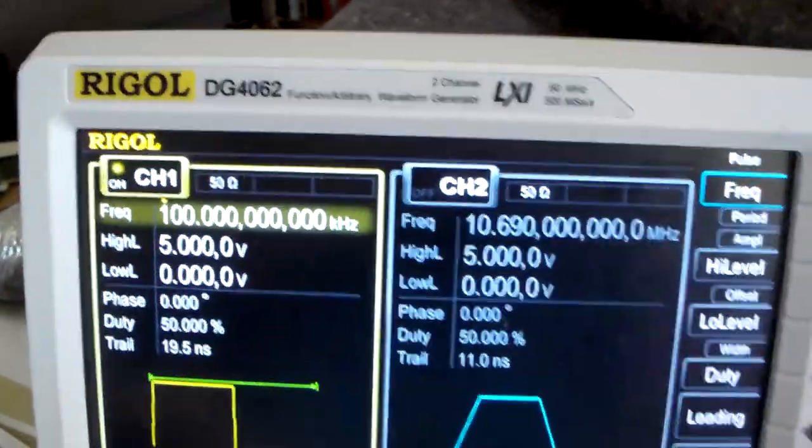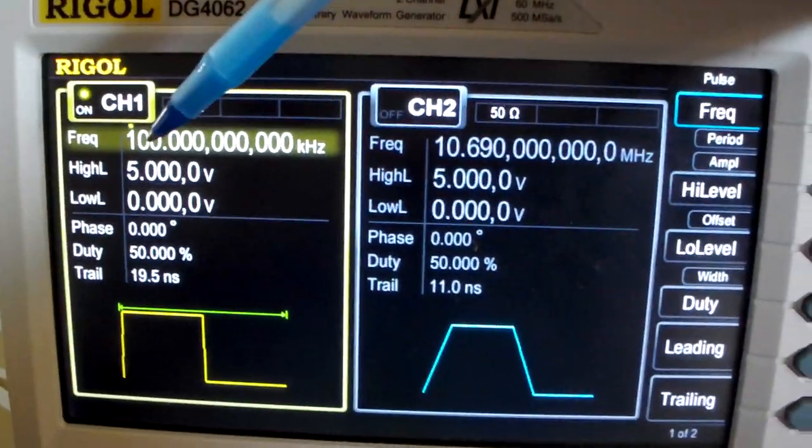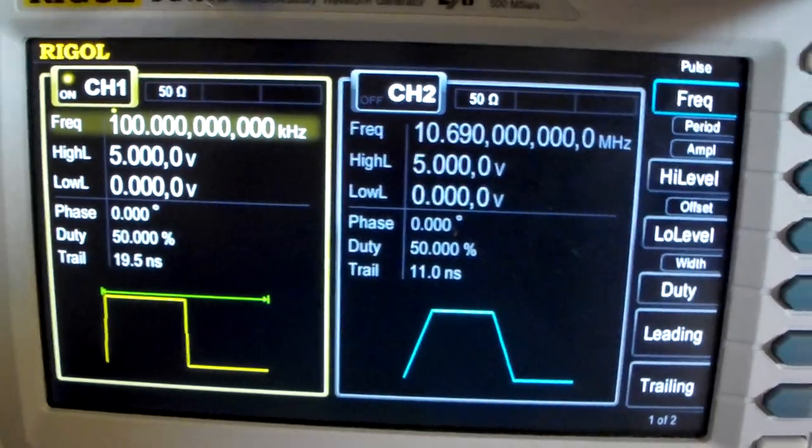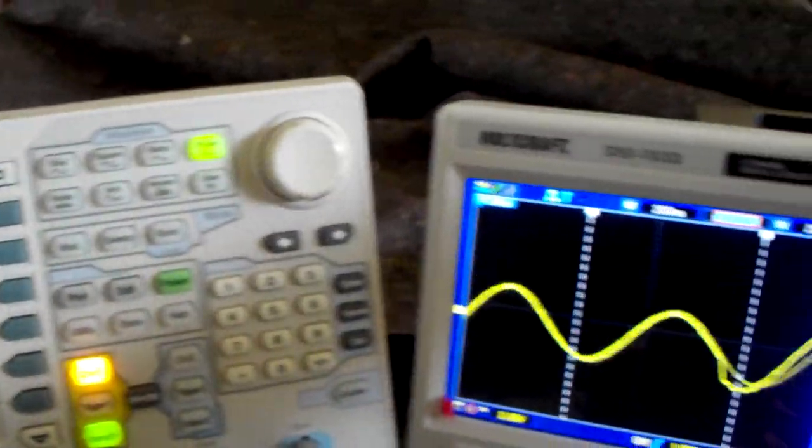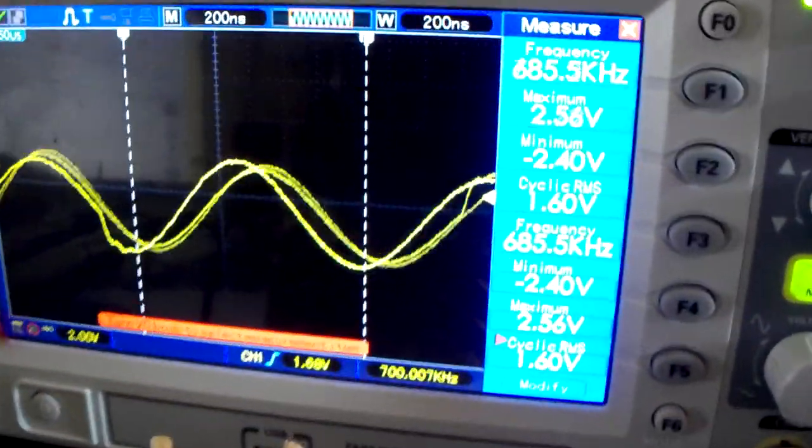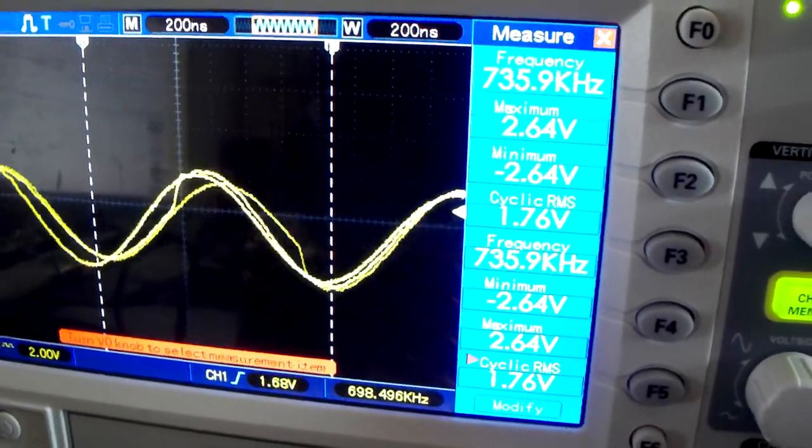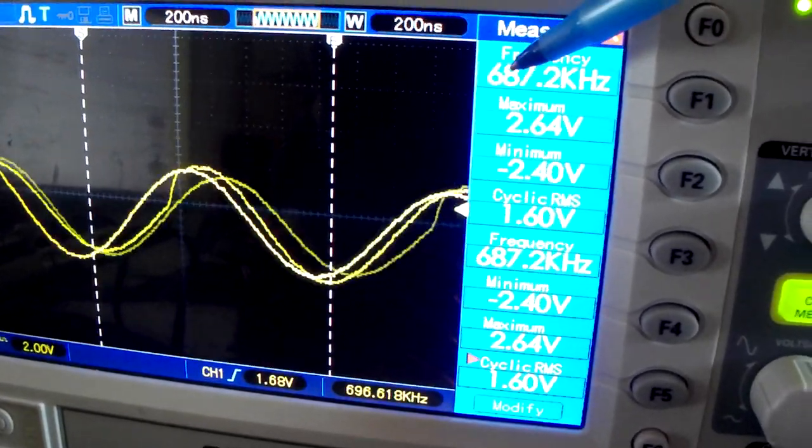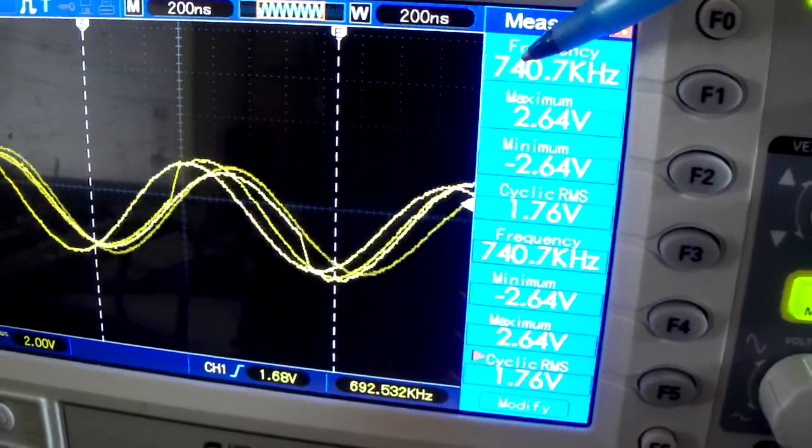I am now pulsing the coil with 100 kilohertz, but if we look at the scope, then we see that our frequency over here is around 690 kilohertz.